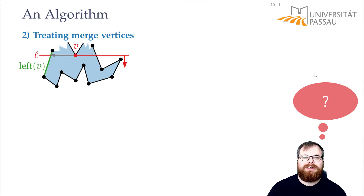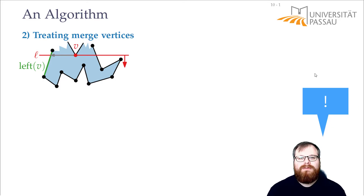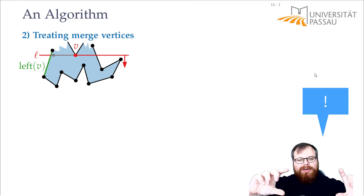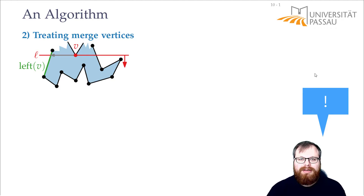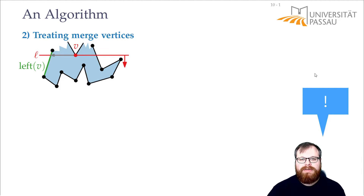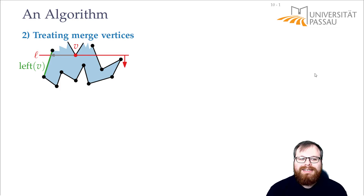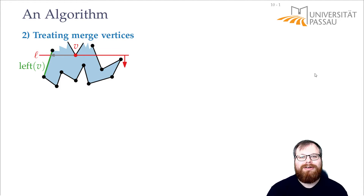How would you treat the merge vertices? One way is we just treat all the split vertices, then flip the polygon over. Now all the merge vertices become split vertices and we do the same thing again. With two sweeps, we can treat all the split vertices and all the merge vertices and get a y-monotone polygon. But this is a bit boring, so I will show you another way to do it all in one go — treating the split and the merge vertices together.